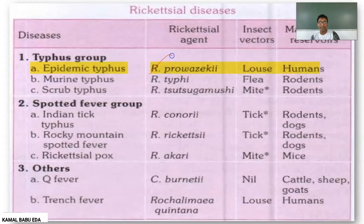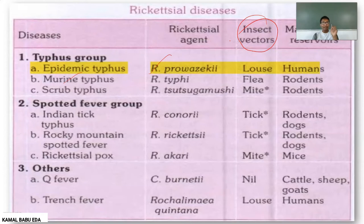The rickettsial agent responsible for Epidemic Typhus is Rickettsia prowazekii and the insect vectors are humans. The next type is Murine Typhus, caused by Rickettsia typhi; the insect vectors are the flea, and the mammalian reservoirs are rodents.